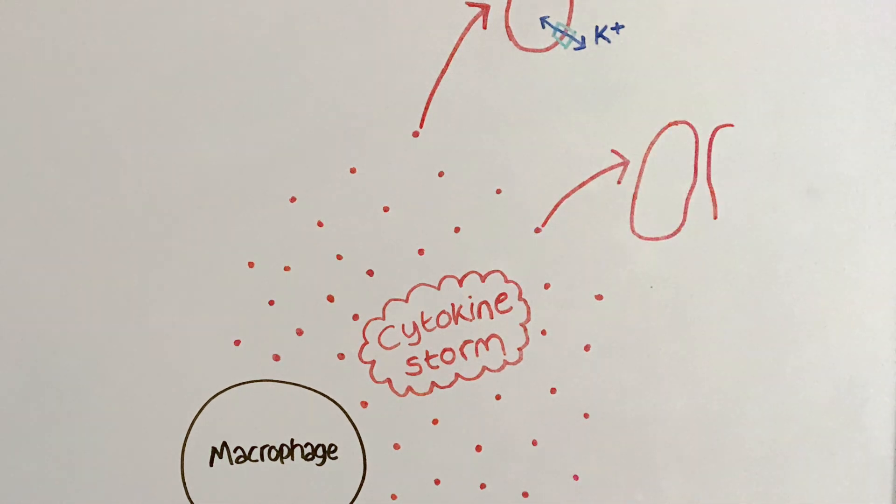In patients with cystic fibrosis, pro-inflammatory cytokines cause hyperinflammation, leading to lung tissue destruction.